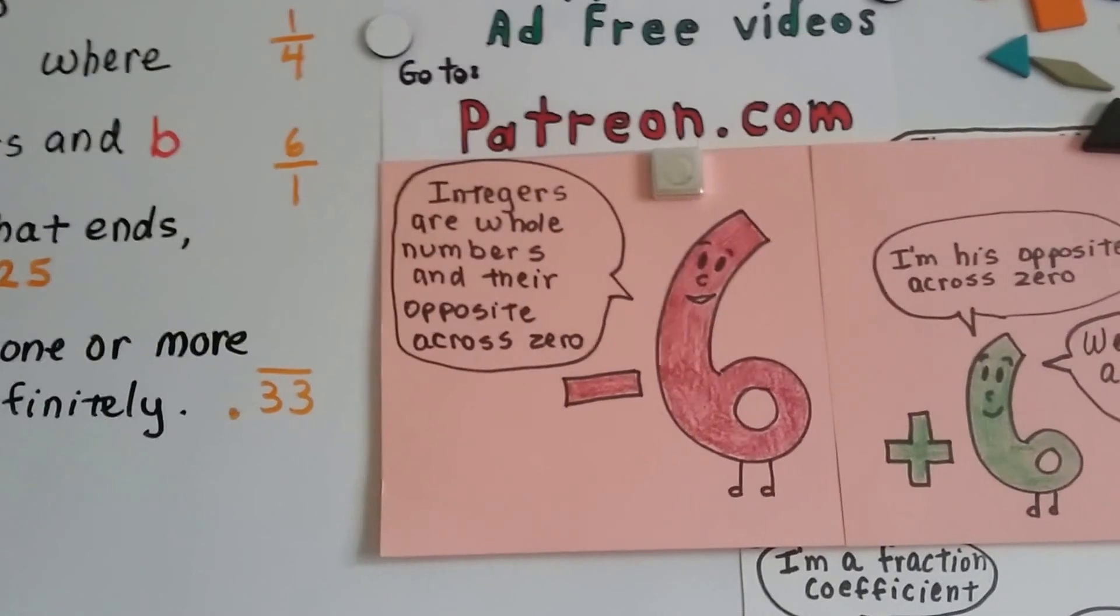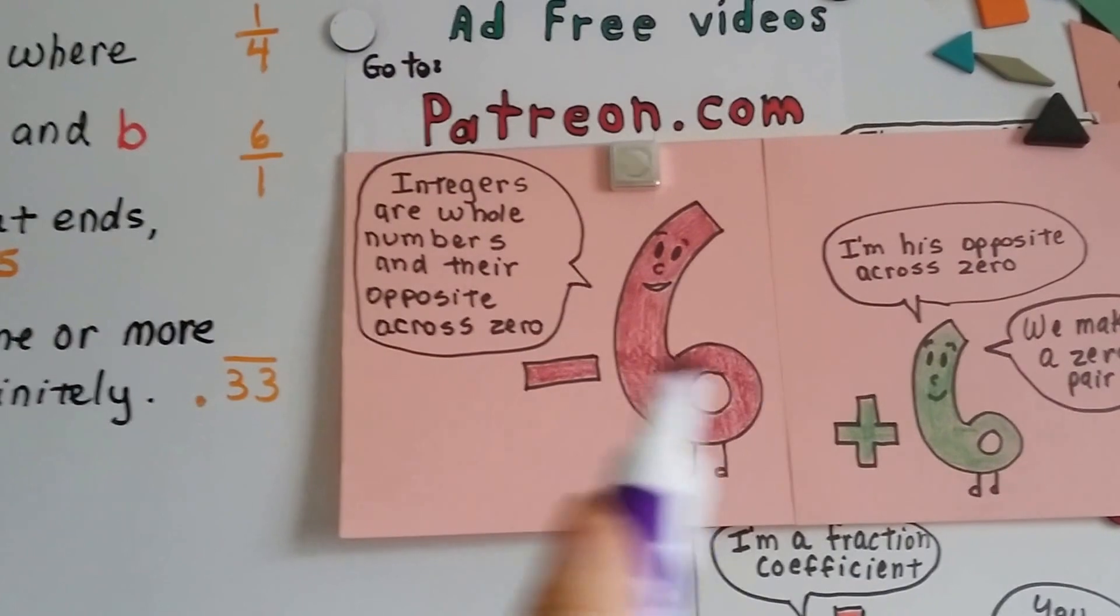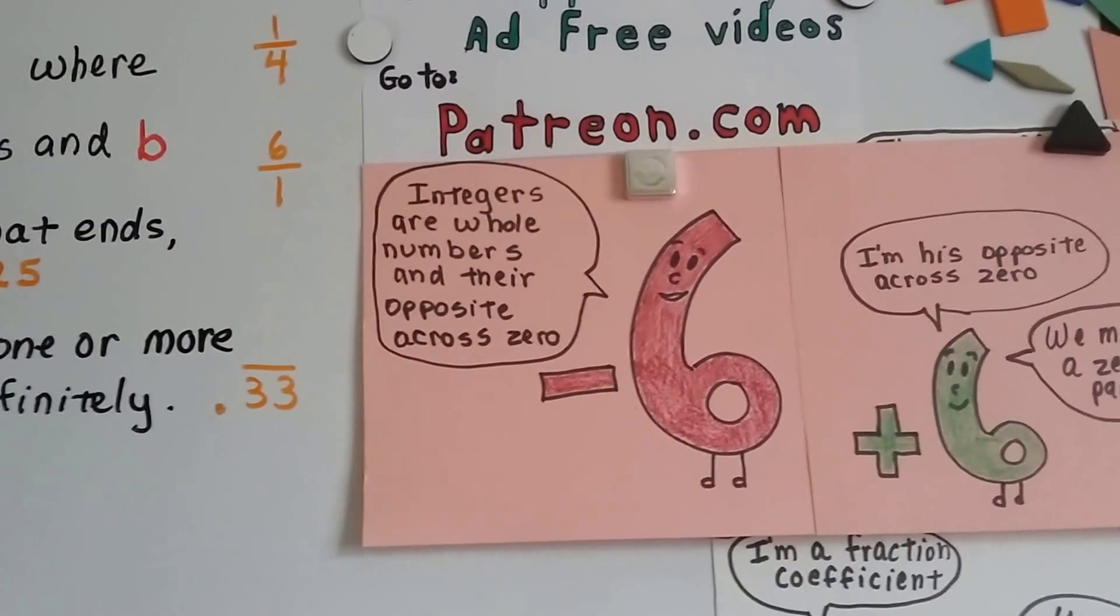Do you remember what an integer is? They're whole numbers and their opposites across zero. Negative 6 and positive 6 are both integers, and they are opposites across zero on a number line.